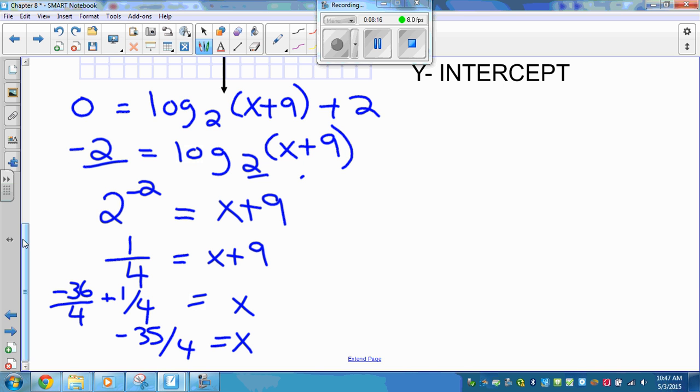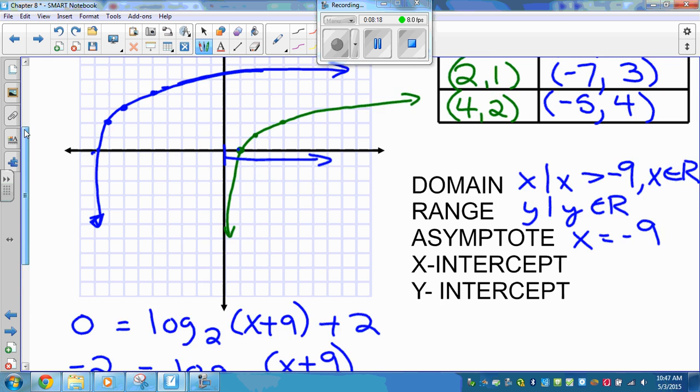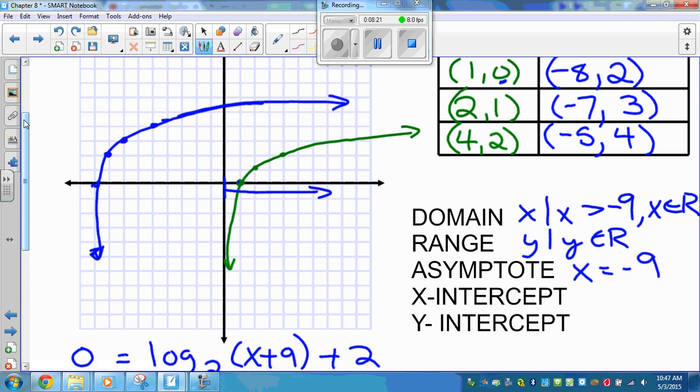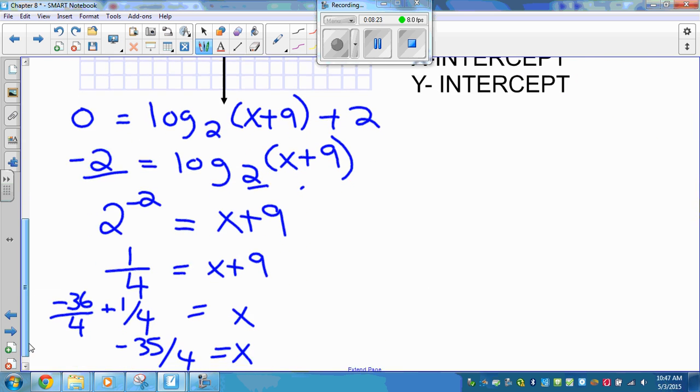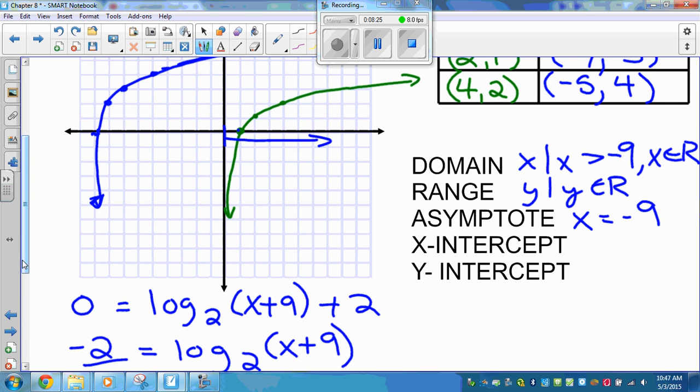So that's what this point is right here. Negative 34 quarters. Just short of negative 9, which makes sense because we're approaching our asymptote at negative 9. So we said that was negative 35 quarters.